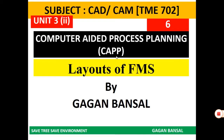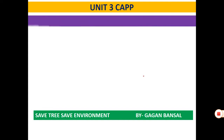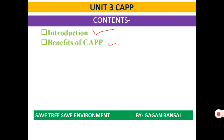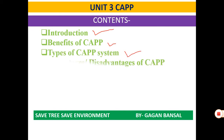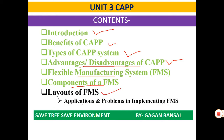Hello everyone, continuing with our lecture series on Computer Aided Process Planning, that is Unit 3 Part 2. Today in this particular lecture we will be focusing on Layouts of Flexible Manufacturing System. We have previously covered Introduction, Benefits, Types, Advantages and Disadvantages of Computer Aided Process Planning, Flexible Manufacturing System and its Components. Today we will be studying Layouts of FMS, Applications of FMS, and Problems in Implementing Flexible Manufacturing System.